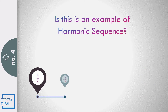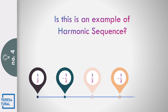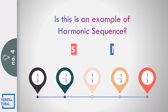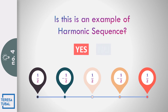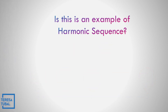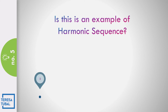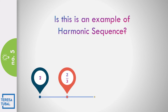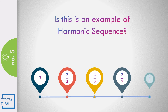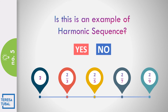How about number 4? Is 1/2, −1/2, 1/2, −1/2, and 1/2 a harmonic sequence? Correct — the answer is no, because this is an example of a geometric sequence. Question number 5: Is 2, 2/3, 2/5, 2/7, and 2/9 a harmonic sequence? Correct — the answer is yes.